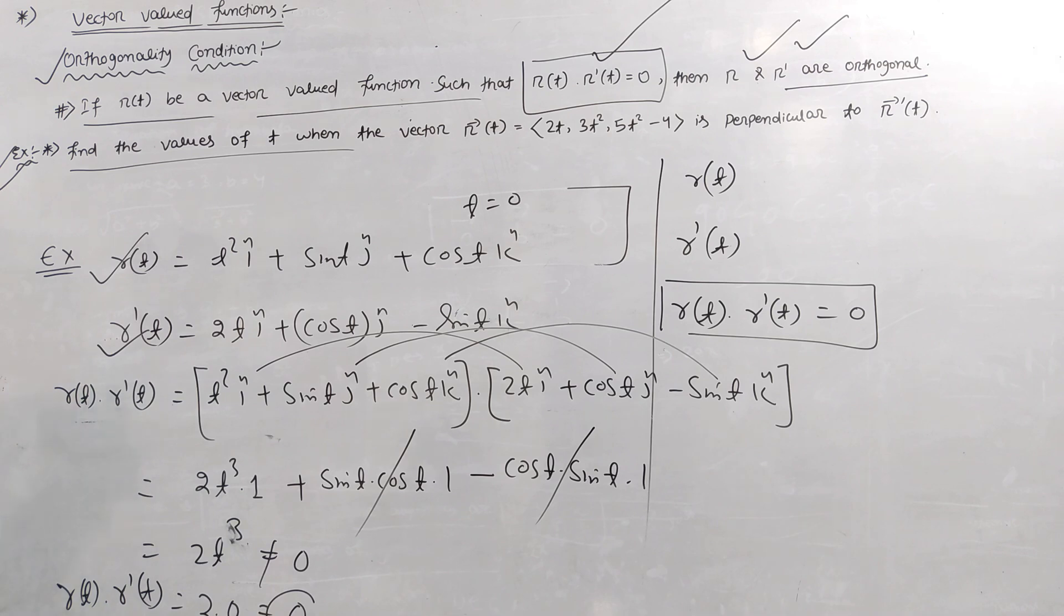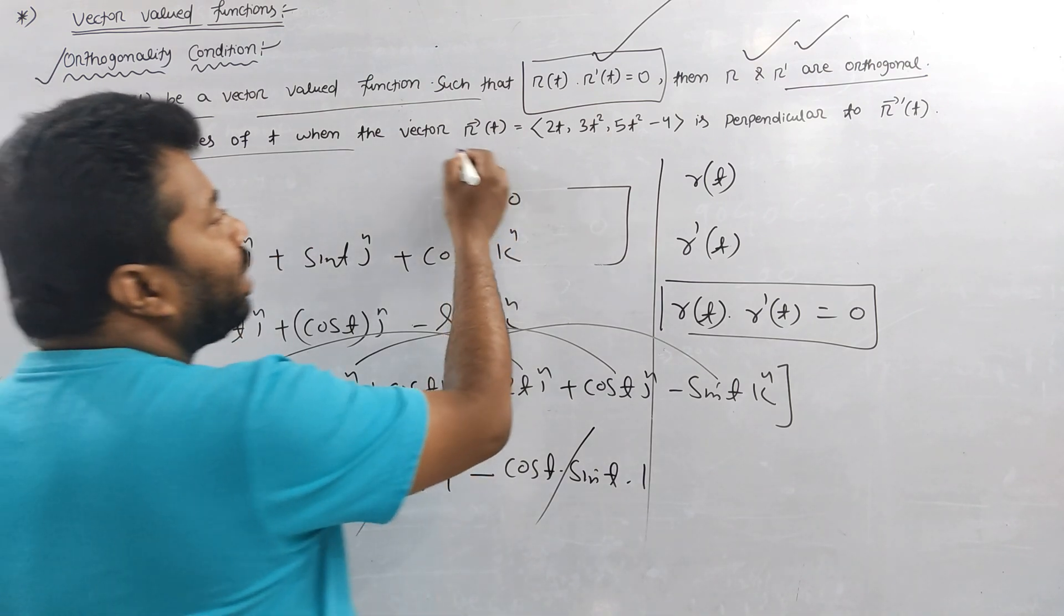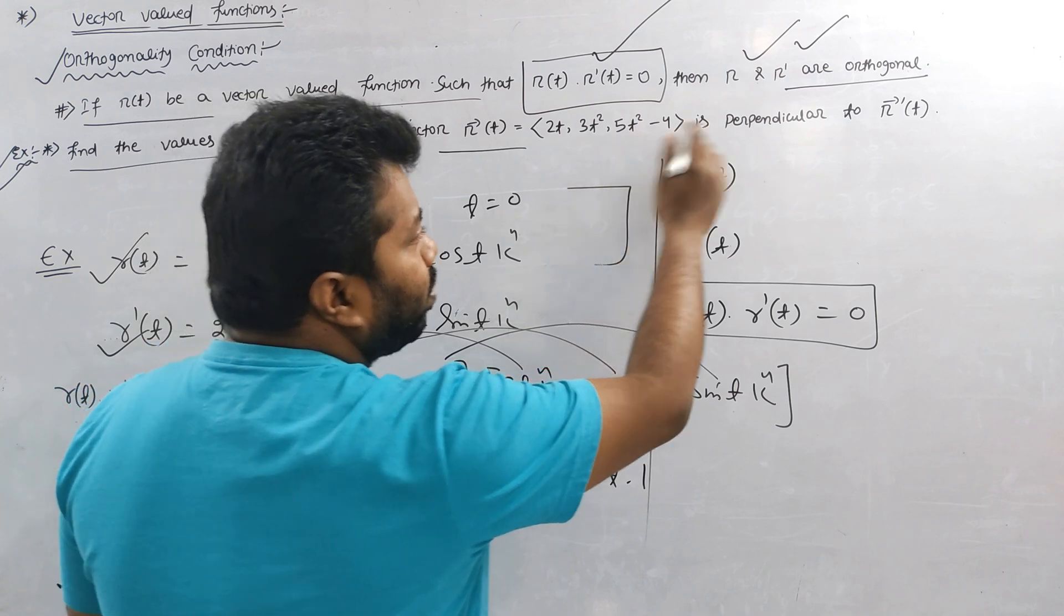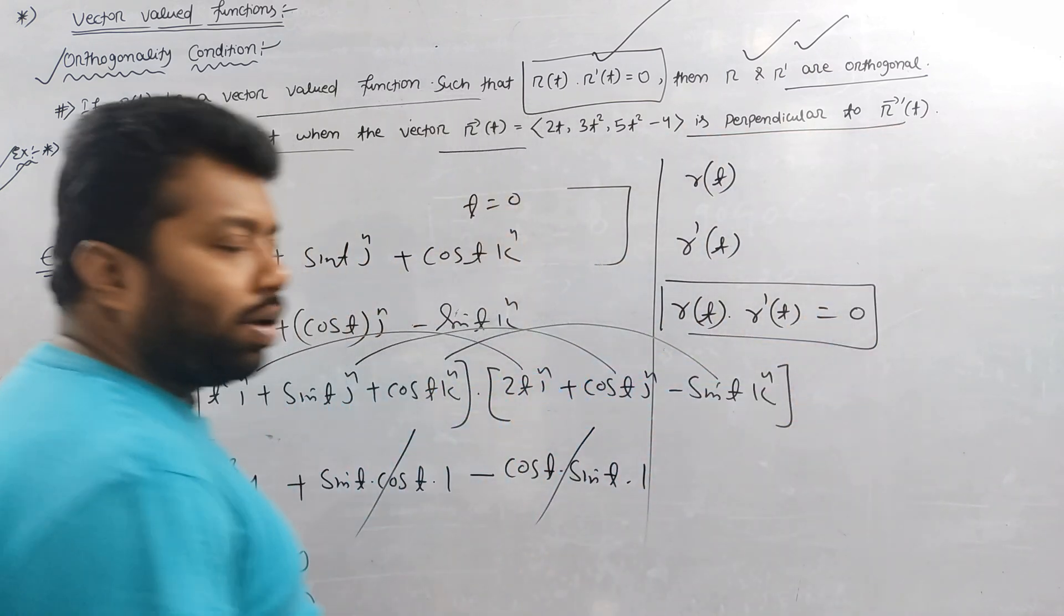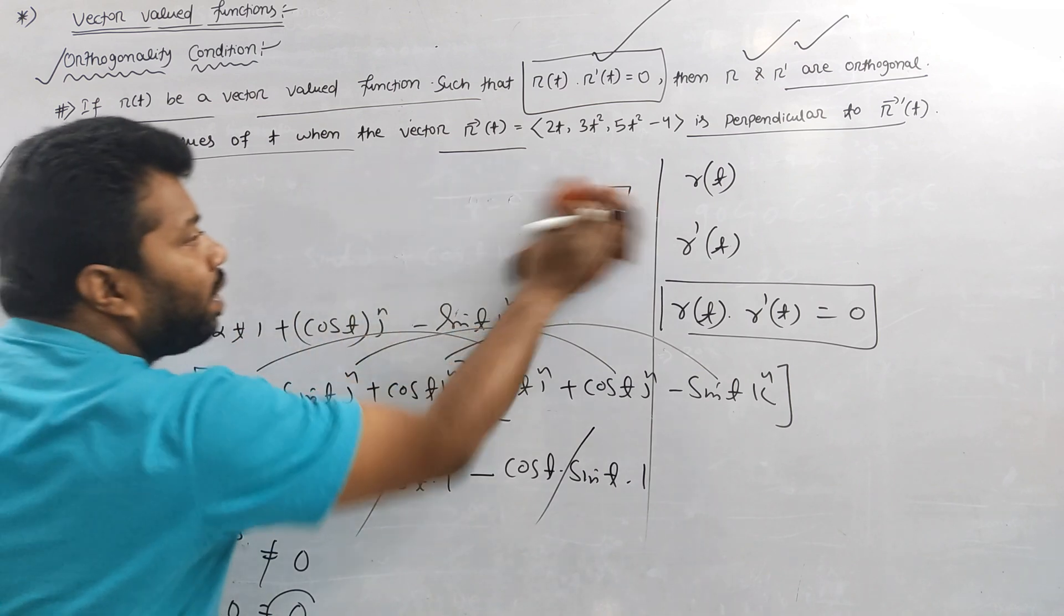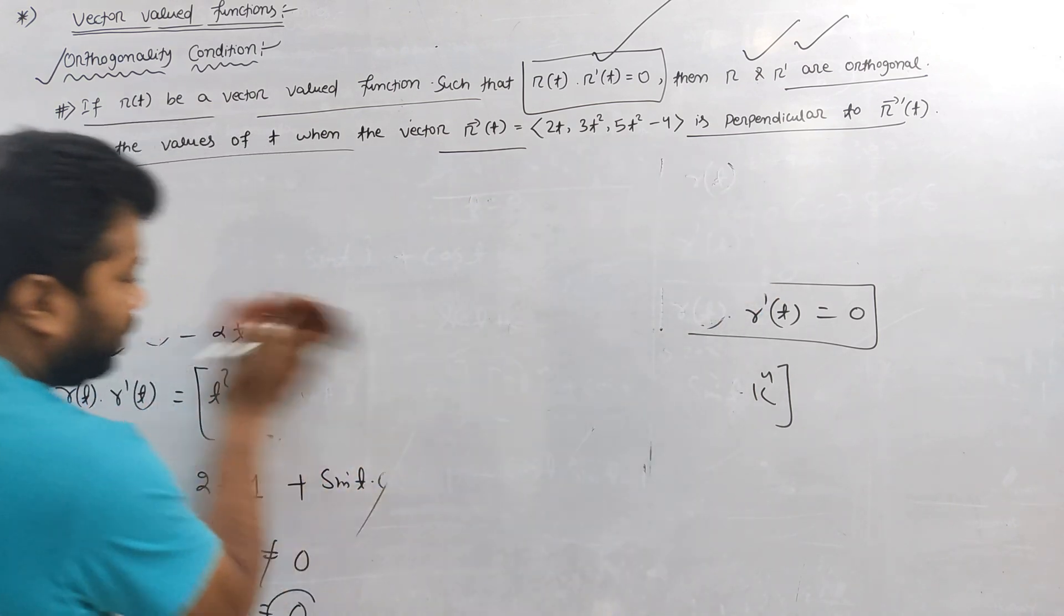Find the value of t when the vector r of t is equal to 2t i plus 3t square j plus 5t square minus 4 k. This is perpendicular to r dash t. Perpendicular is orthogonal.